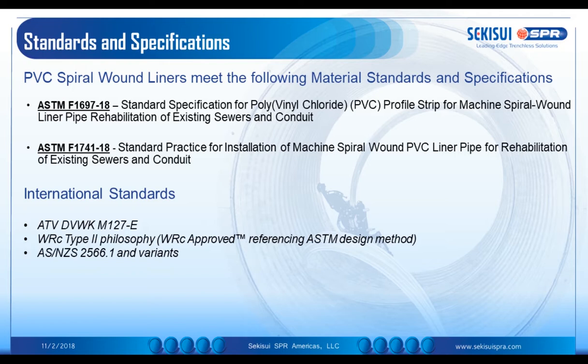In Australia, we actually use a variant where part of a direct barrier pipe standard is employed, in addition to using the ASTM for the partially deteriorated design condition. Of course, the global market can be quite fractured in certain areas, and other countries do have their own national standards. For example, France has its own standard.